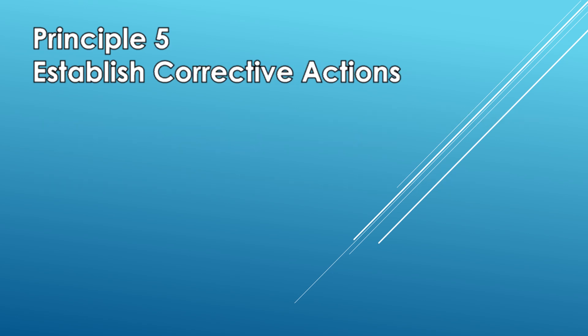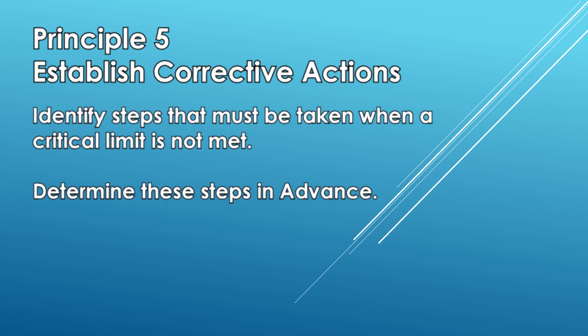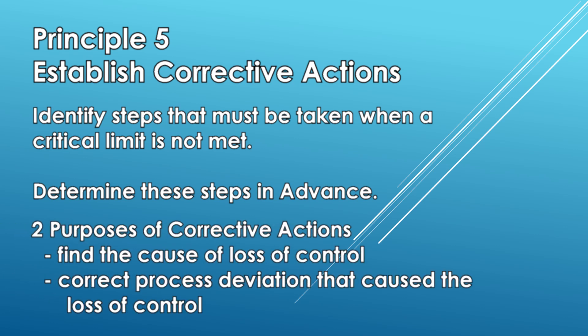Principle 5 — Establish corrective actions for CCPs that are not under control: if monitoring determines a CCP is not within the established limits, corrective actions must be in place to ensure no public health hazards occur. Corrective actions have two purposes: to check and correct any process deviations that cause loss of control, and to find the cause and make sure it doesn't happen again.